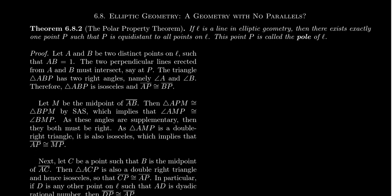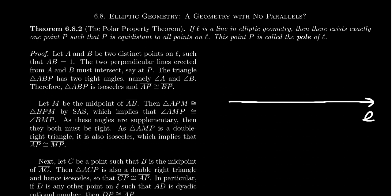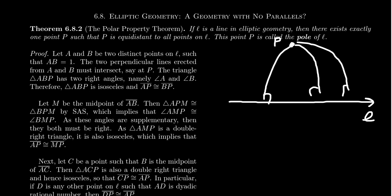The polar property theorem states that if L is a line in elliptic geometry, then there exists exactly one point P such that P is equidistant to all points on L. This point is called the pole of the line. So given an elliptic line, there is one point equidistant from every point on the line. If we take all the perpendiculars dropped from P onto L, in elliptic geometry there will be uncountably many perpendiculars dropped, and all of these are going to be congruent to each other — the same measure.